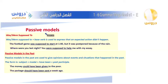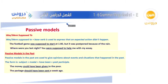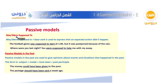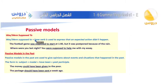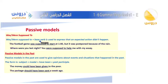Now, passive modals. In passive, you drop the subject and make the object the subject. We use was/were supposed to plus base verb. The base verb is the base form — for example, 'be' is the base form of is/are/was/were, and 'write' is the base form of written.